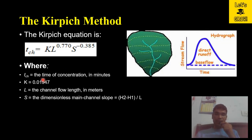Now, how to calculate the time of concentration for a given catchment or watershed? We can use the Kirpich method. The Kirpich method is the most popularly known method for the calculation of time of concentration. The Kirpich equation is an empirical equation where t_ch is the time of concentration in terms of minutes.